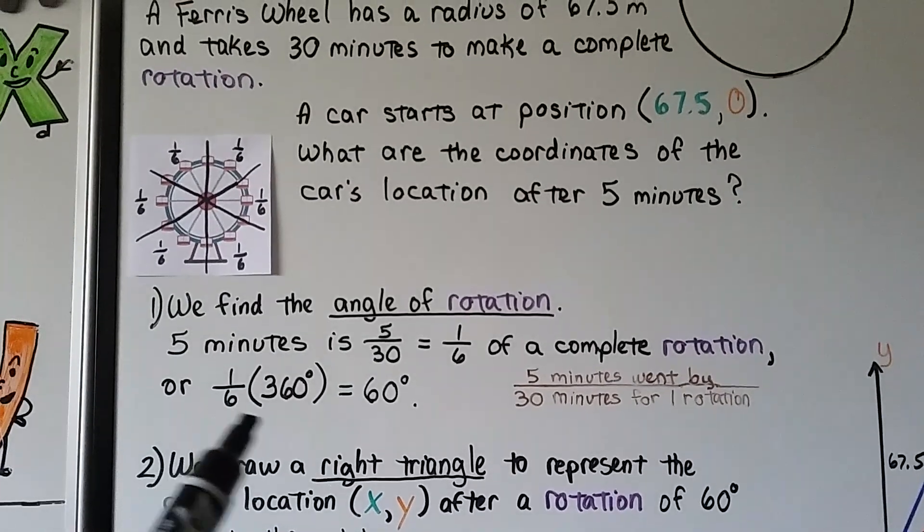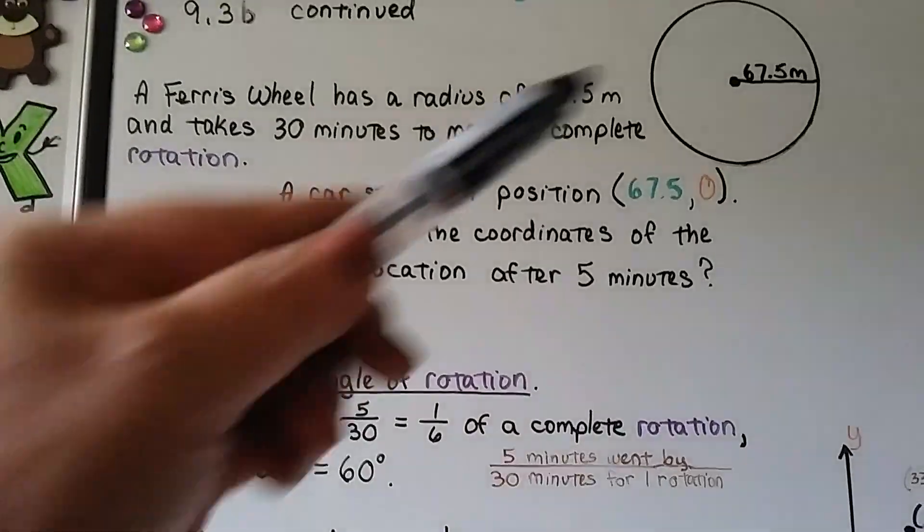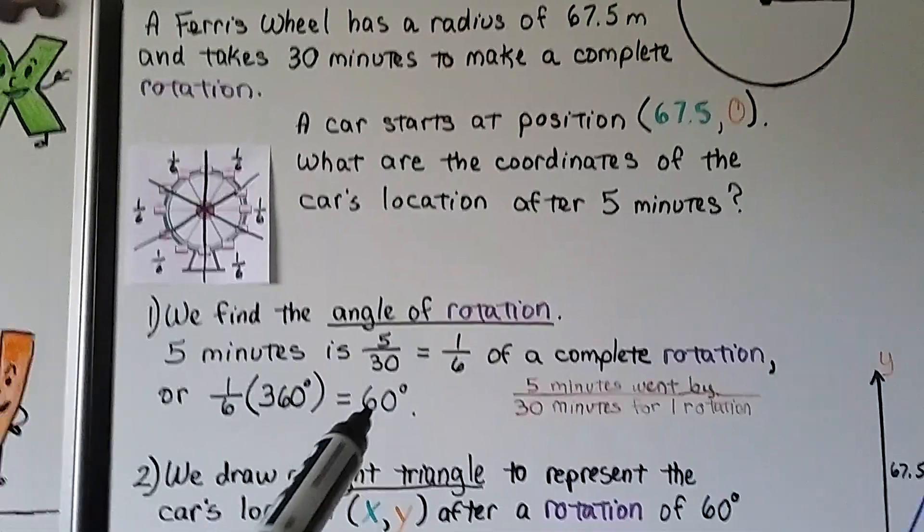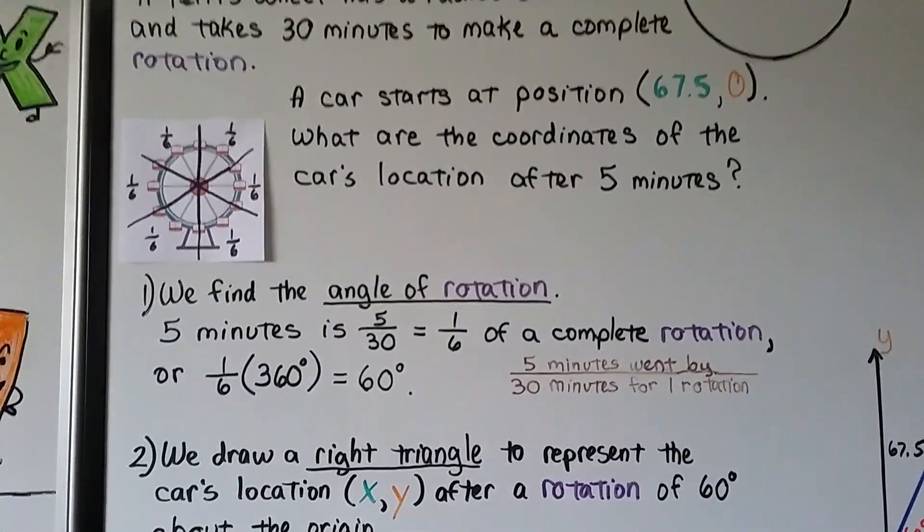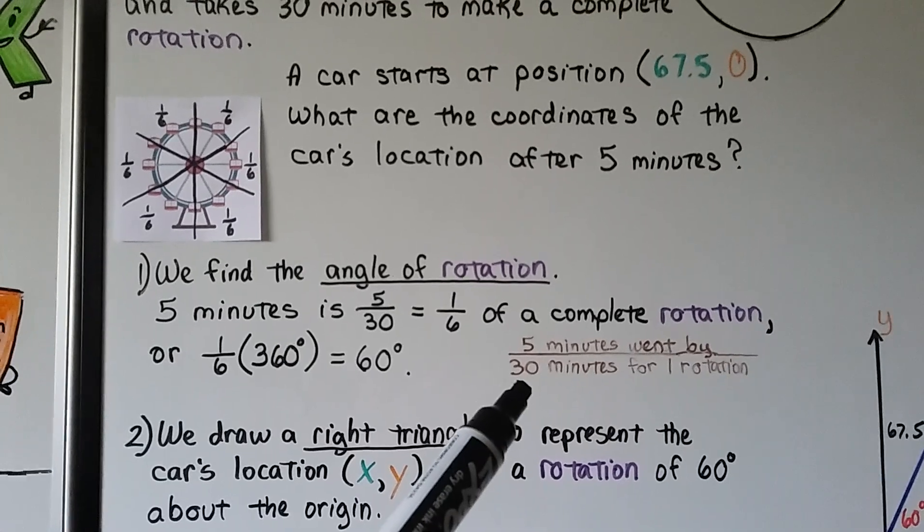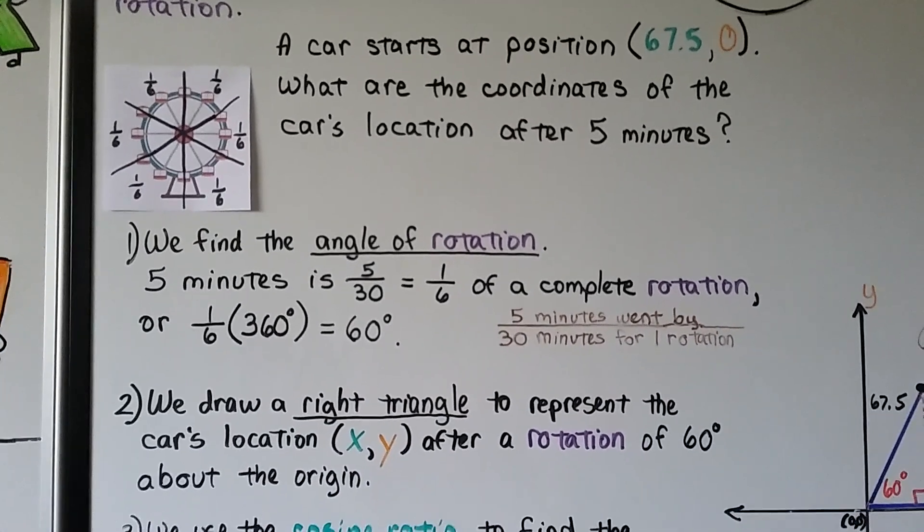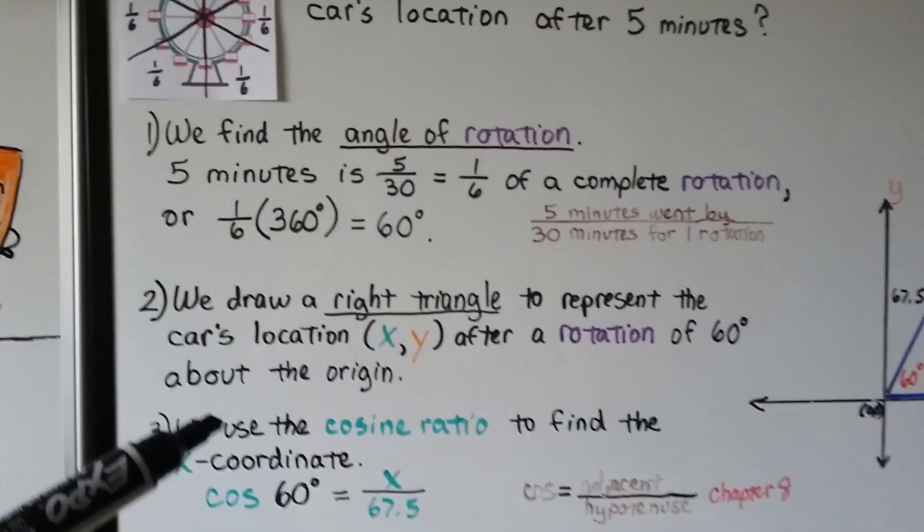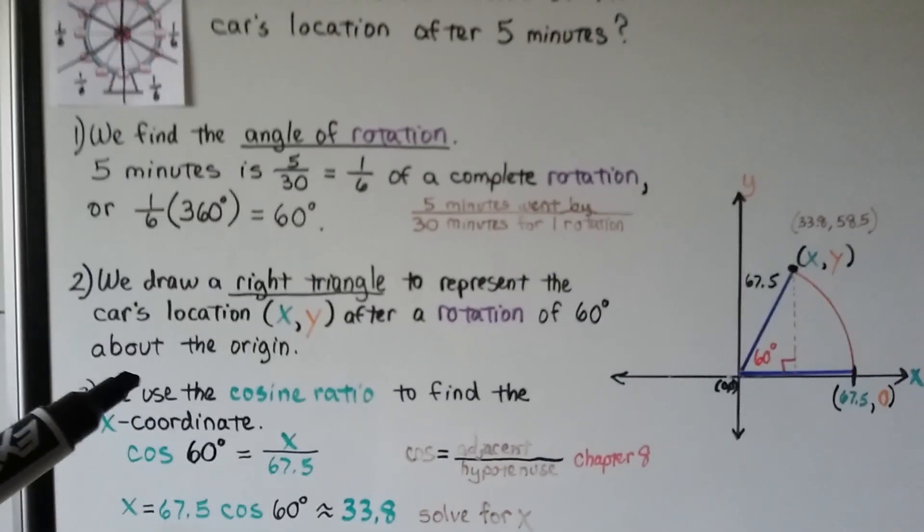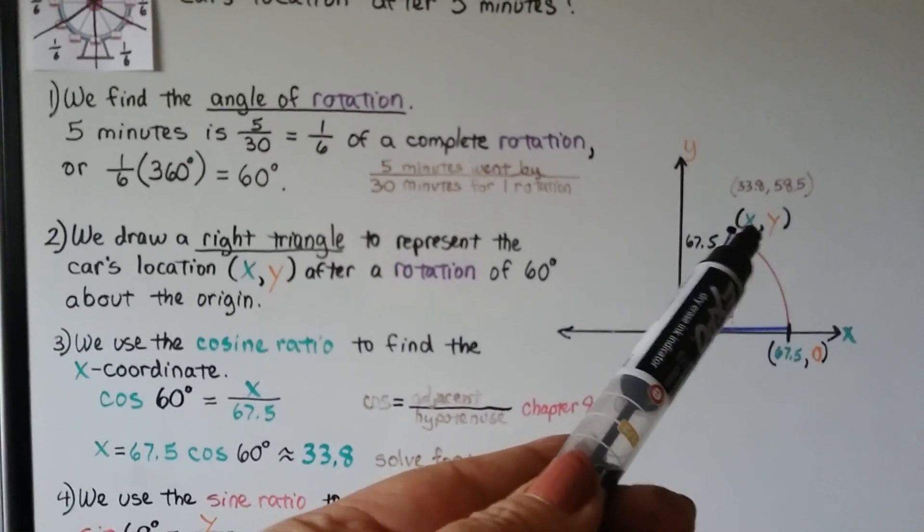And 1 6th of 360 degrees, which is the degrees of a circle, would be 60 degrees. Five minutes went by and 30 minutes for one rotation, so we had 5 thirtieths, which simplified to 1 6th. We draw a right triangle to represent the car's location, x, y, right here.